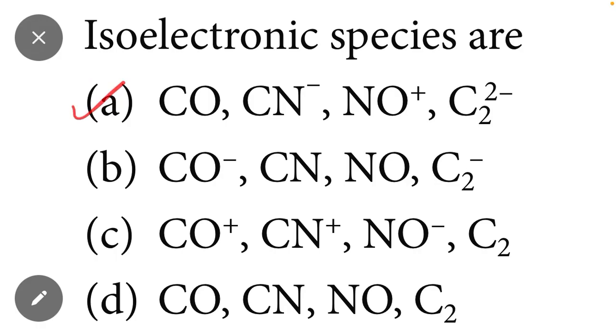Because carbon has six electrons and oxygen has eight electrons, means carbon monoxide (CO) has 14 electrons. Similarly, carbon has six electrons, nitrogen has seven electrons, but minus one means one more electron, so 6 plus 7 plus 1 equals 14 electrons.